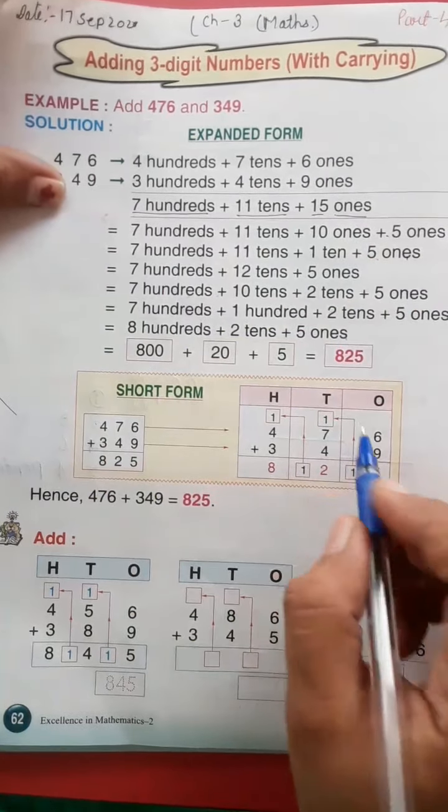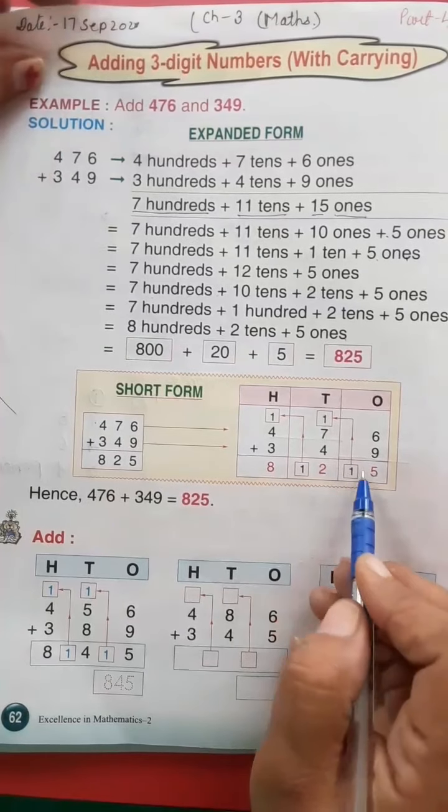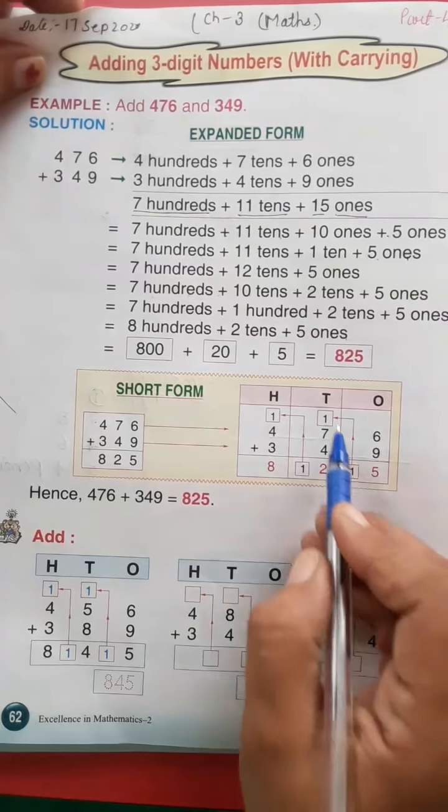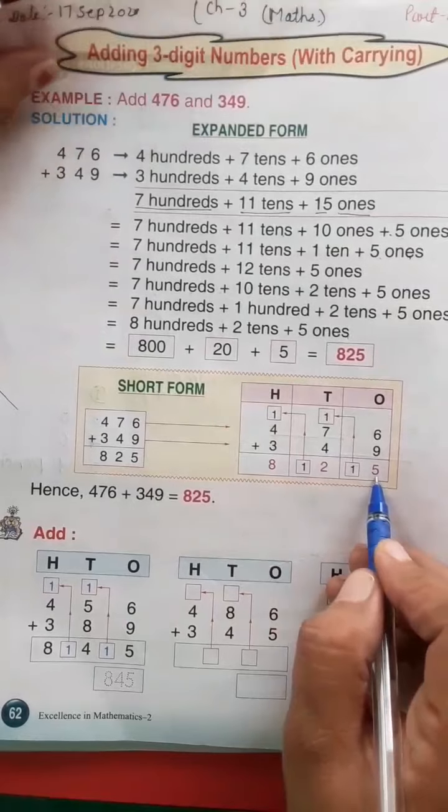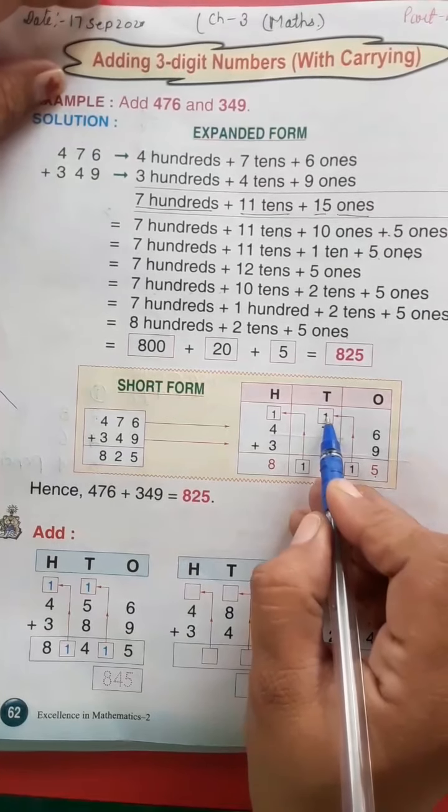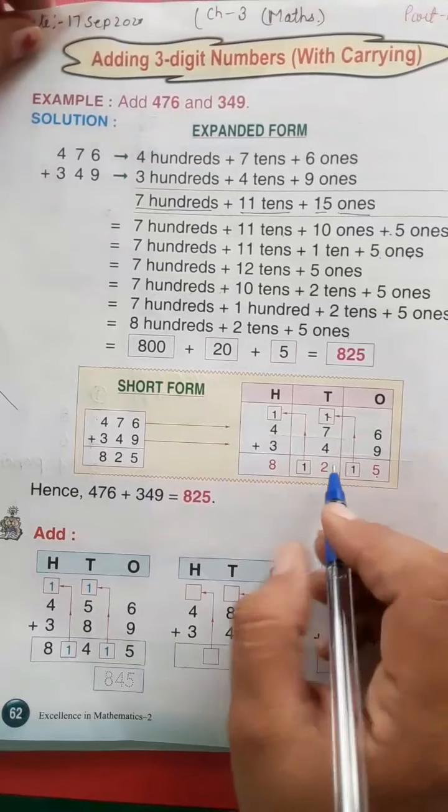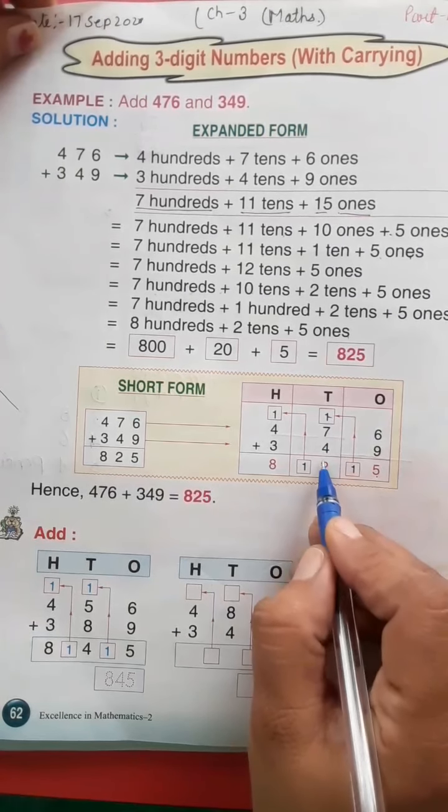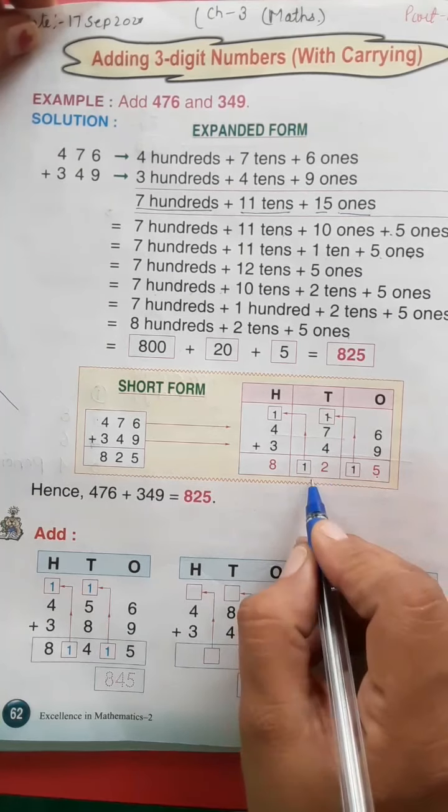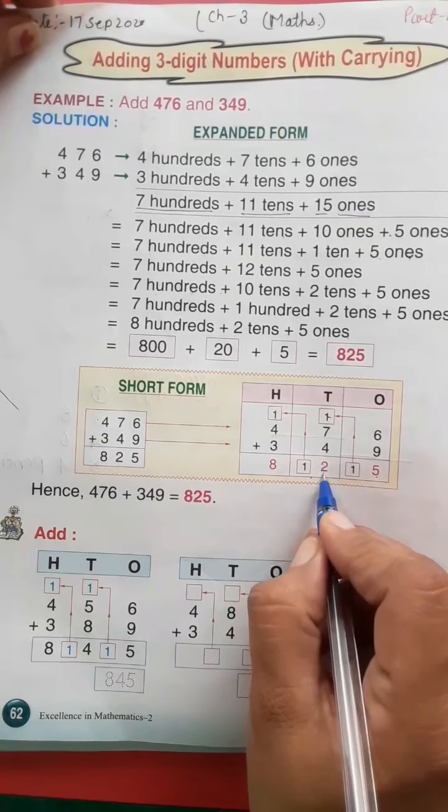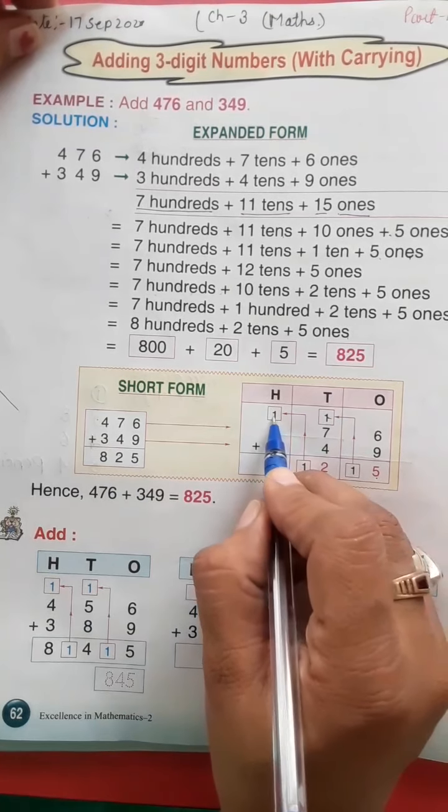Yani ki yeh jo carry method hai, if we put carry on the ones, we put one digit below five, and we put carry on the tens place. In this way, we put the tens digit below and we put the sum of 12, so we put the 2 of 12 below and we put carry on the hundreds place.